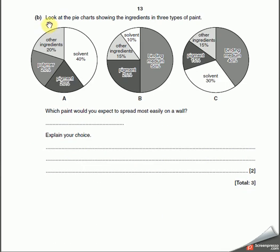Now look at the pie chart showing the ingredients of three kinds of paint. This one's 40% solvent, 20% pigment, 20% polymer and ingredients. This one's 50% binding medium, 25% pigment. This one's 40% binding medium, 30% solvent. Which paint would you expect to spread most easily on a wall? What bit of the paint helps things spread? It's obviously the solvent. Solvent helps paint spread. So which one has the most solvent? This one has 30, this one has 10, this one has 40. So it would be A.